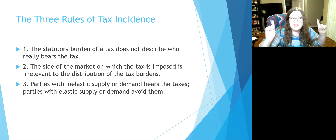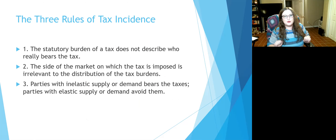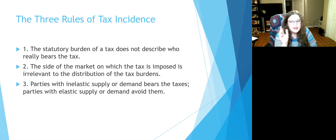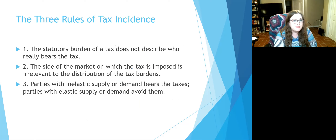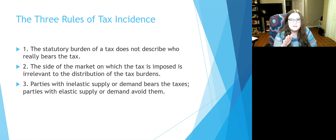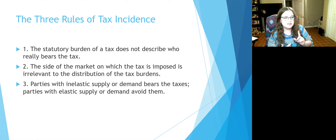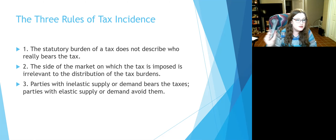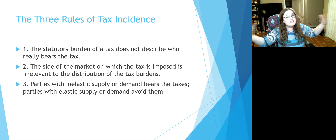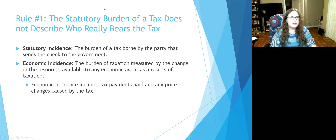So what have we learned? We've learned the first cool rule of tax incidence. Rule one: the statutory burden of a tax does not describe who really bears the tax. Rule two: the side of the market on which the tax is imposed is irrelevant — prices are going to adjust and the burden will end up being shared the same whether you put the tax on the buyer or the seller. Rule three: parties with inelastic supply or demand bear the taxes. We're going to go into why that is.